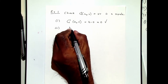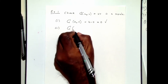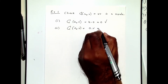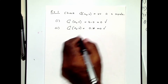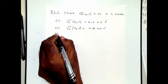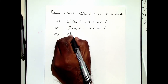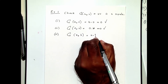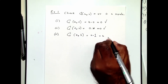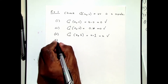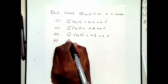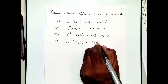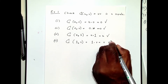Condition two is C(0, v) which is zero, hence it is satisfied. Condition three is C(u, 1) which is u times one, which is equal to u, hence it is satisfied. Condition four is C(1, v) which is 1 times v, which is equal to v, hence it is satisfied.